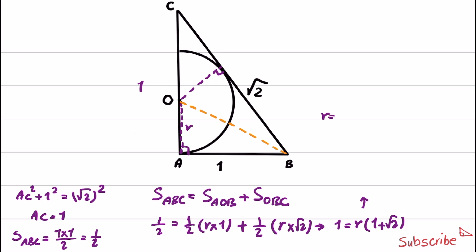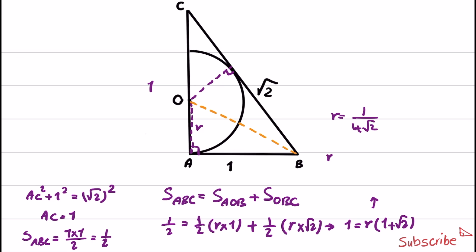1 is equal to R times 1 plus square root of 2. And from this, R is equal to 1 over 1 plus square root of 2. And if you want to further simplify this, this one is equal to square root of 2 minus 1 divided by 1. Now, this is the final answer.